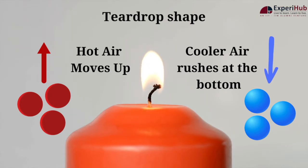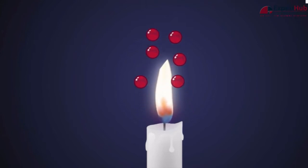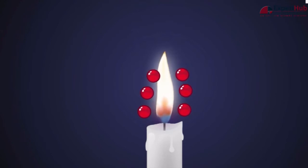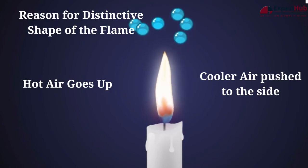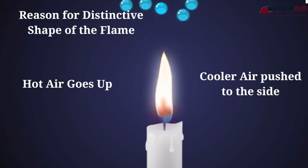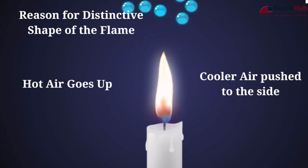Basically, the continuous movement of hot air going up and displacing the cooler air down to the side, which then gets heated up again and moves upwards, causes the distinctive shape of the flame and the reason it always points upward.